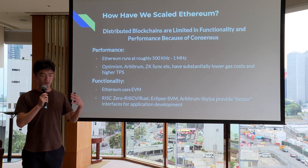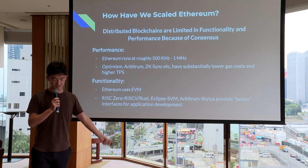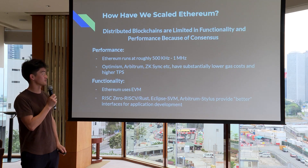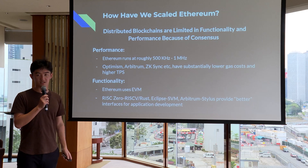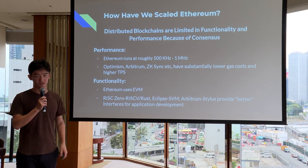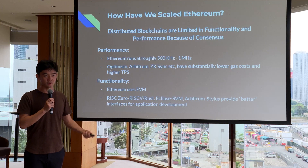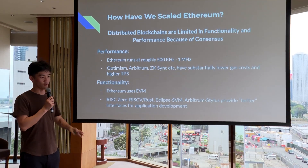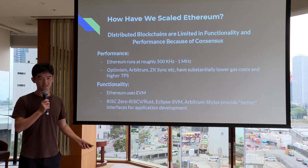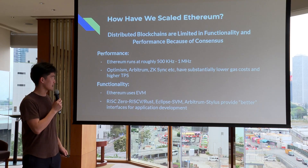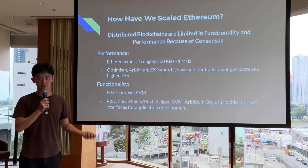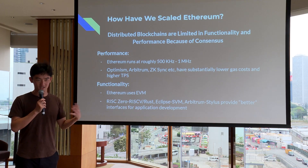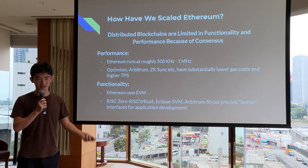A quick overview of how we've scaled Ethereum in the past — this is how we've approached scaling for the past five years. Ethereum is naturally limited in functionality and performance because of consensus, which is an issue distributed networks face. Ethereum's performance is 5,000 to 10,000 times slower than your phone, so we've built rollups on top of Ethereum — Optimism, Arbitrum, zkSync — giving slightly lower gas fees and more TPS.